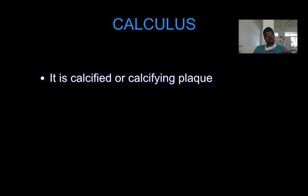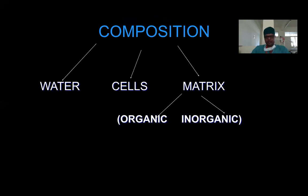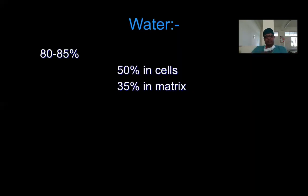Calculus is calcified or calcifying plaque, and you'll learn more about it in detail separately. Let's now move to the composition of plaque. Dental plaque is primarily made up of water — about 80–90% is water. The rest consists of various cells and a matrix, which can have both organic and inorganic components.